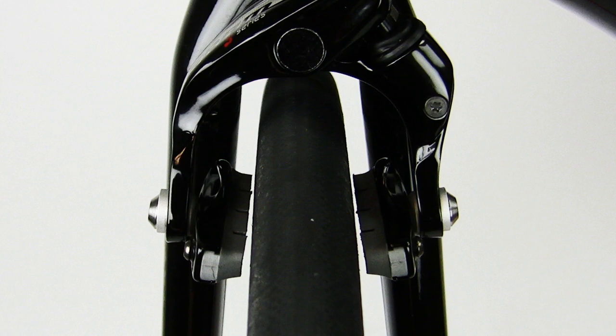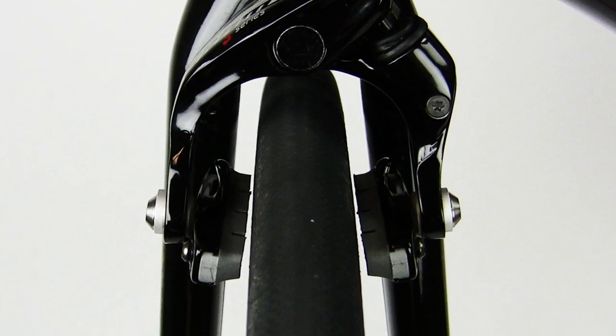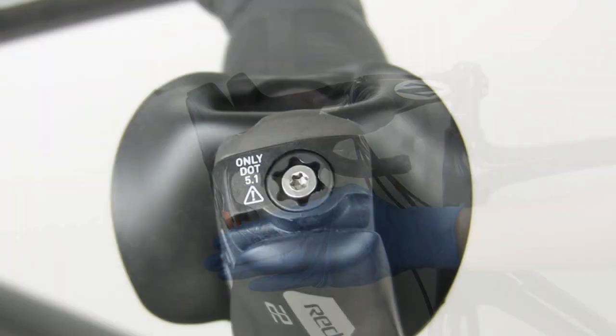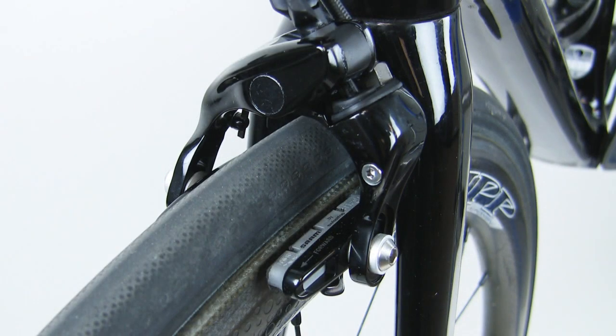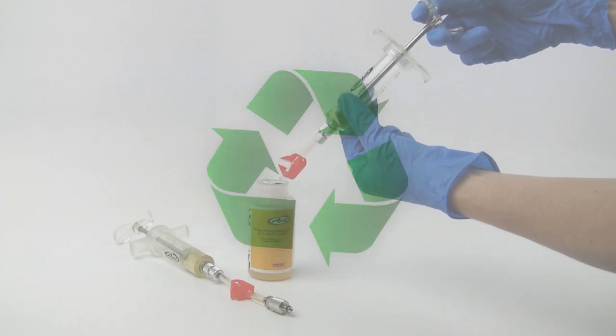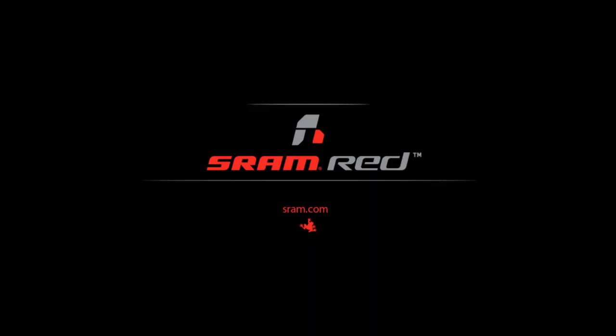For proper brake pad adjustment, please consult the user manual. Pull on the lever very firmly several times. Inspect the lever and caliper for any leaks. Dispose of DOT fluid in accordance with local and federal regulations. This concludes the bleed procedure for the SRAM Road Hydraulic Rim Brakes. Thanks for watching.